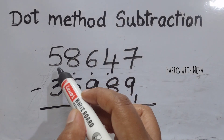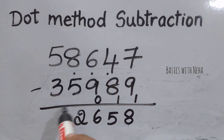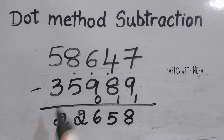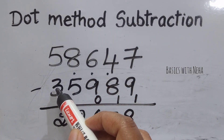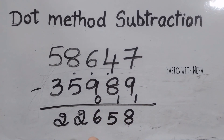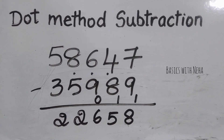Now the last one we can do directly: 5 minus 3 is 2. When the numbers are direct, you can just directly subtract and write the answer. My final answer will be 22658. I hope this video was helpful. For more such videos, please subscribe to my channel and support me. See you all in my next video — until then, take care.